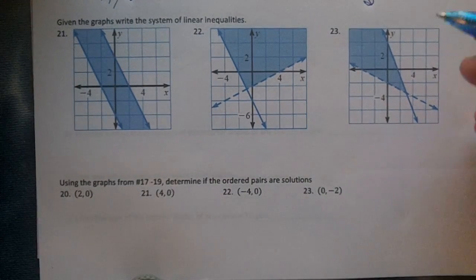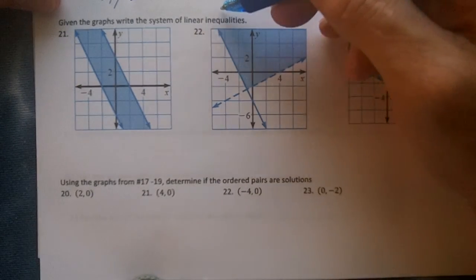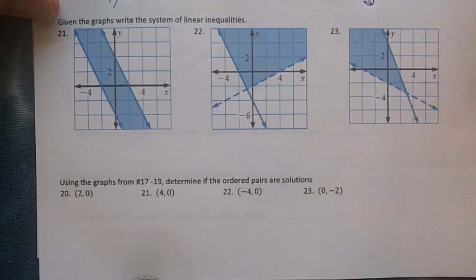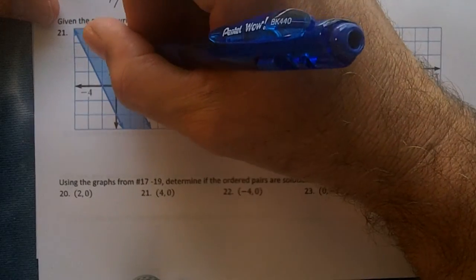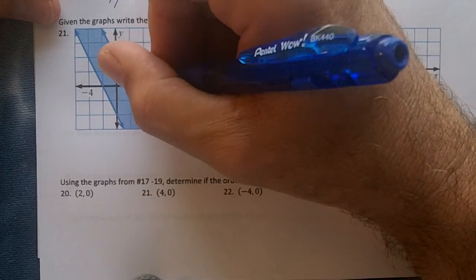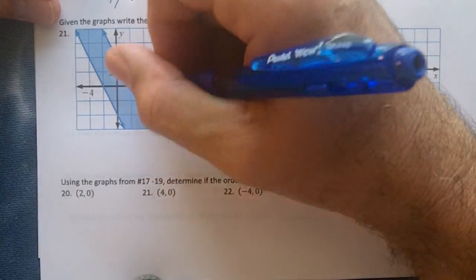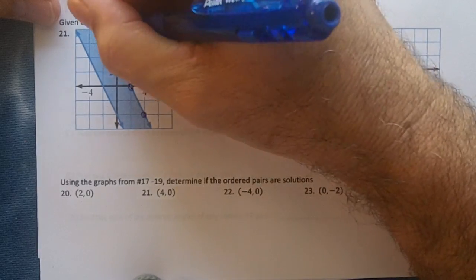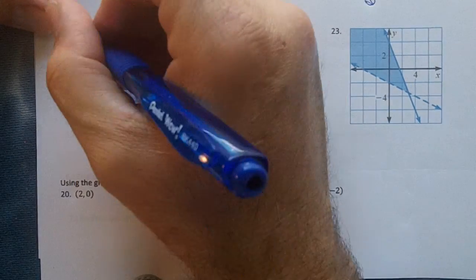Problems 21 to 23: given the graphs, write the system of linear inequalities. You need to get your grid points. So I'm going to put grid points on this one and on this one.